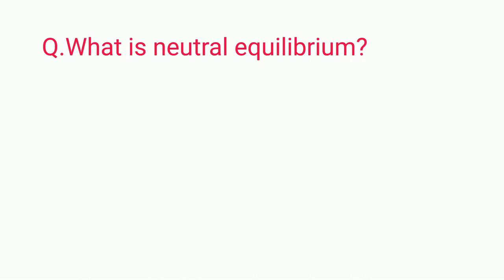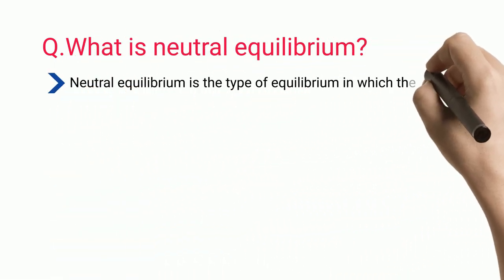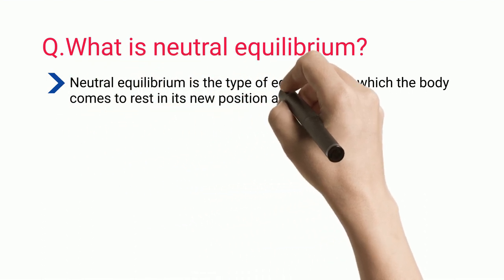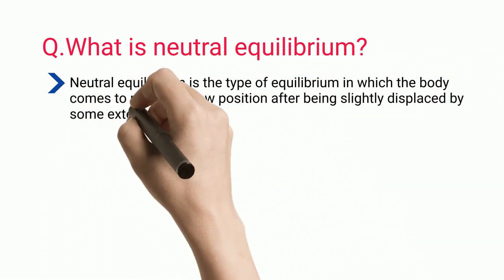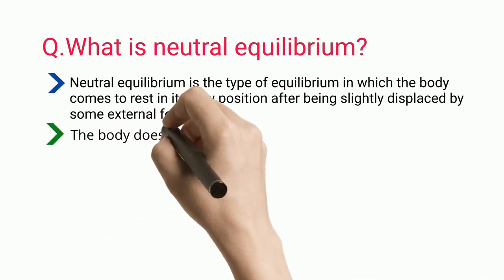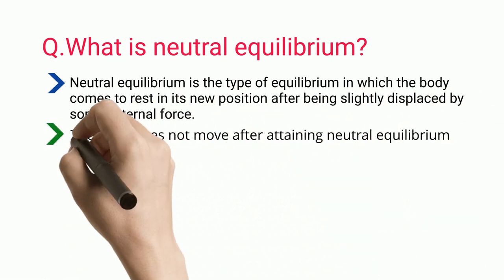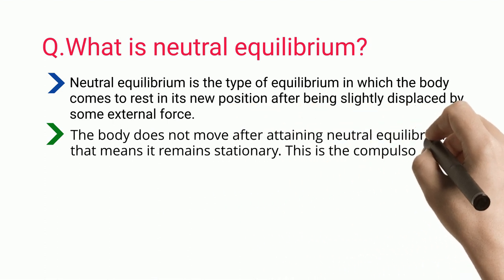Neutral equilibrium is the type of equilibrium in which the body comes to rest in its new position after being slightly displaced by some external force. The body does not move after attaining neutral equilibrium — that means it remains stationary.